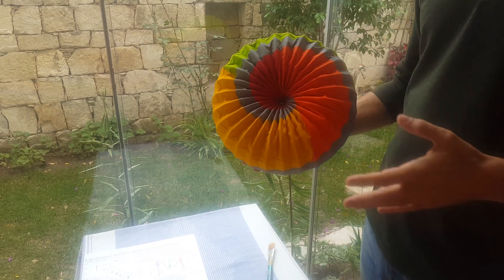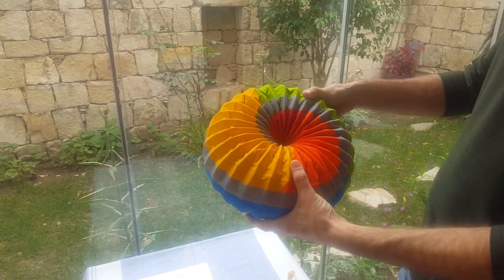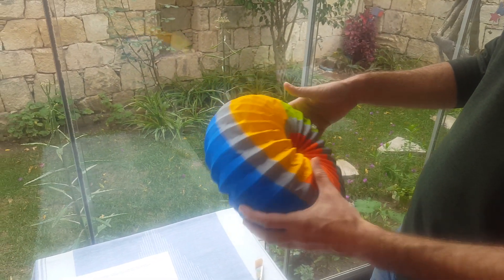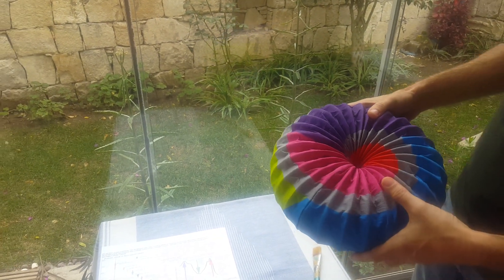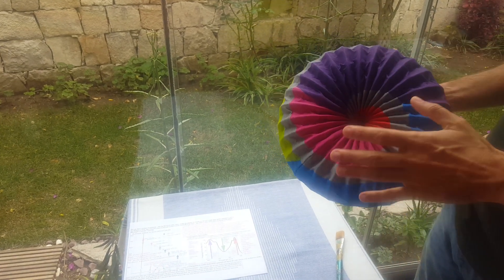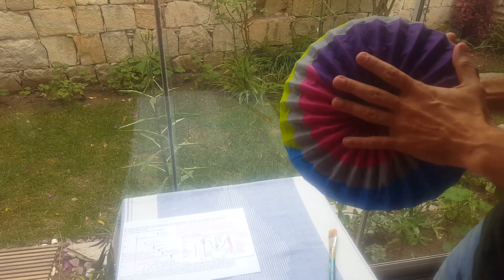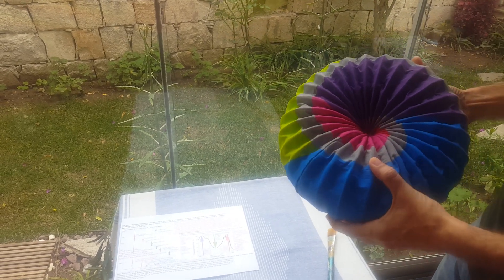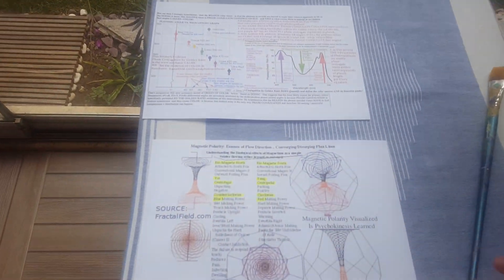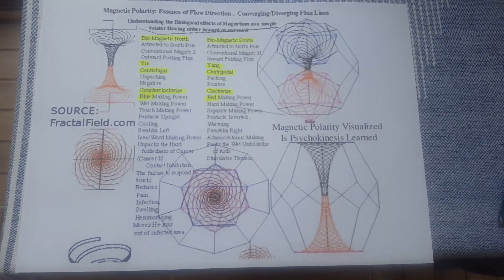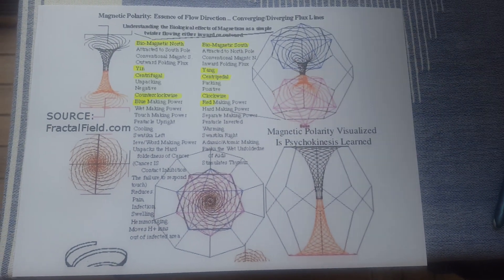On the centrifugal part, we see the dominant blue color. Blue is biomagnetic north, attracted to the south pole, and it is the yin part of the equation. You can find this information at fractalfield.com, along with more about the qualities of the centrifugal and centripetal sides of toruses.